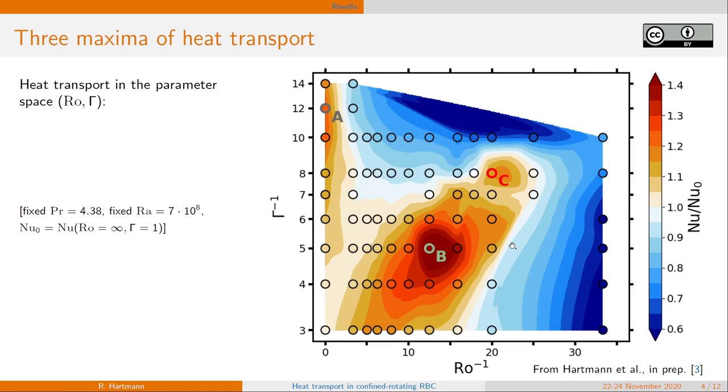Let us start with the heat transport in a 2D parameter space of rotation and confinement for fixed Prandtl and Rayleigh number. And despite the similarity we have just seen, we do not observe a connected region of enhancement with a clear maximum. Actually, we observe three separated maxima.